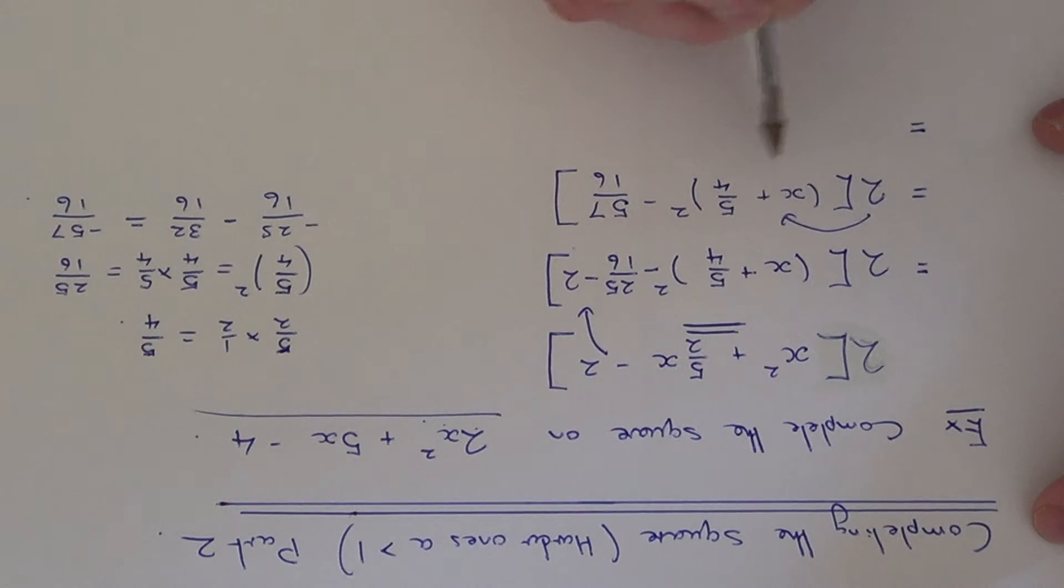So the 2 multiplies the first term in the bracket, you just basically just need to put the 2 in front of the bracket here. And then we need to multiply the 2 by the 57 over 16.